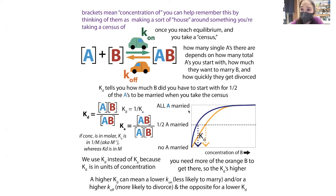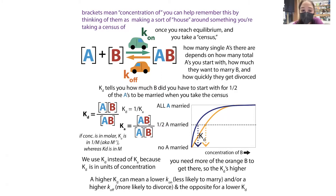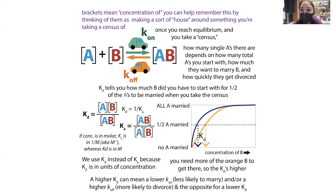When people are trying to make drugs, they want a really low Kd — otherwise they'd have to give enormous doses, leading to side effects. So pharmaceutical companies do experiments to determine the Kd of their compounds so they know how much is needed, and they can make modifications to try to lower that value.